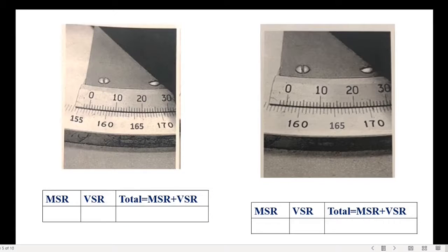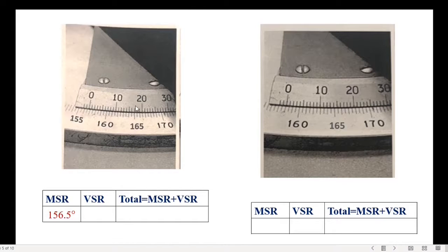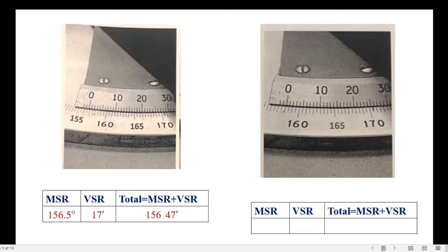Here are a few more examples for a better idea of how to take readings. In the first example we have 155, 156, and 156.5, so the main scale reading is 156.5. The vernier scale coincidence line is 17, so the vernier reading is 17 minutes. Since 0.5 degrees equals 30 minutes, the total reading is 156 degrees 47 minutes (30 + 17 minutes).